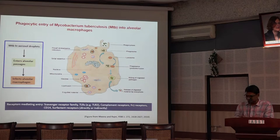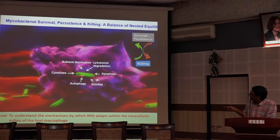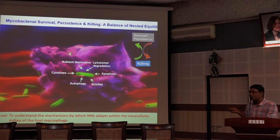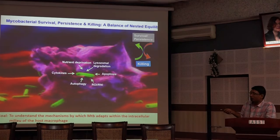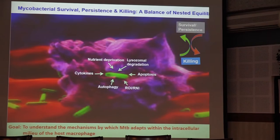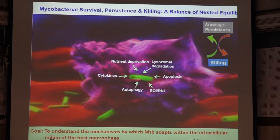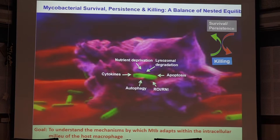Once mycobacteria gets inside, the macrophage can potentially do many things to make life difficult: block nutrients, use machinery to degrade the mycobacteria, and trigger inflammation, autophagy, and a whole range of processes. But the fact that mycobacteria can actually survive means it has found a way to control all of these processes and shut them down. It's converting something very hostile — a very hostile cell — into a very friendly environment.